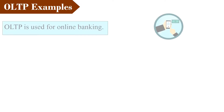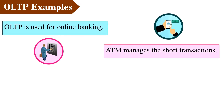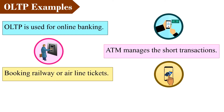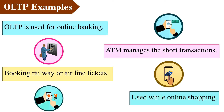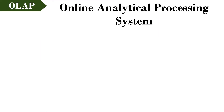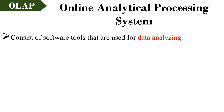Now let us discuss examples of OLTP. OLTP is used for online banking. ATM is also an OLTP operational system that manages your short transactions. OLTP is used while booking tickets online, such as train or airline tickets. OLTP is also used while online shopping.